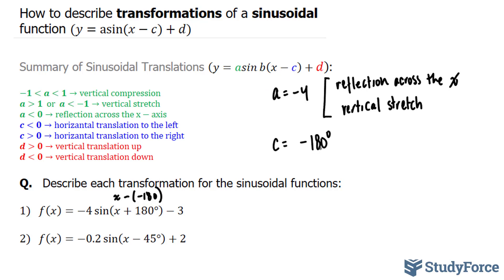What does a negative c value do? Well, according to this, if c is less than 0, you end up with a horizontal translation to the left, meaning that your whole wave function will be shifted to the left by 180 degrees.